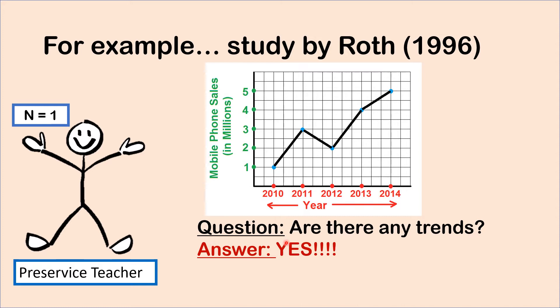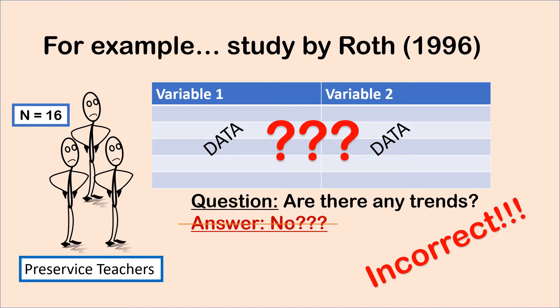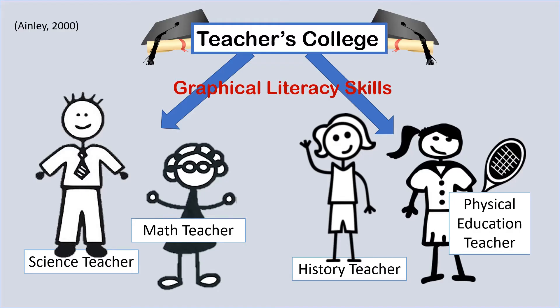That one individual said yes, and they were correct. Unfortunately, the remaining 16 pre-service teachers did not use any graph — they simply tried to look at the data and interpret it for trends. Because it was so difficult to do so, they answered no, which was the incorrect response. This is one example of why graphical literacy skills need to be emphasized more in teachers college.